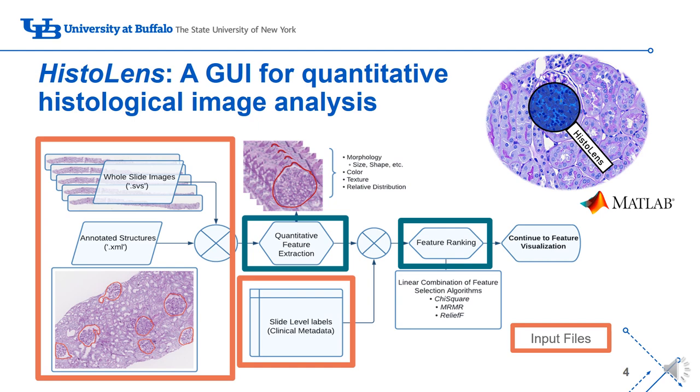This is followed by a feature ranking method using chi-square, maximum relevance minimum redundancy (mRMR), or ReliefF.